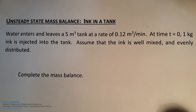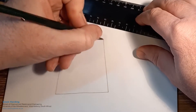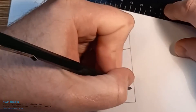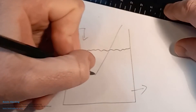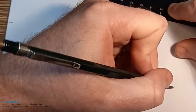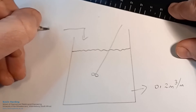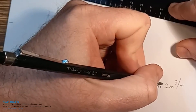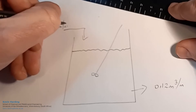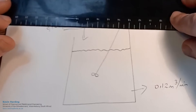Let's draw the system. We have a tank with water in it. Water is entering and exiting this well-mixed tank at a rate of 0.12 cubic meters per minute in, and 0.12 cubic meters per minute out. The question is to complete the mass balance.